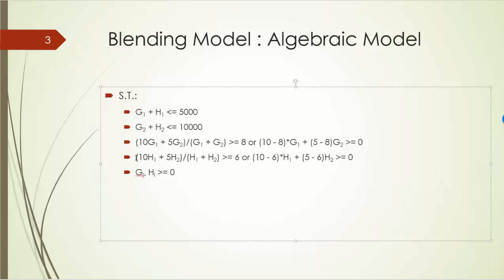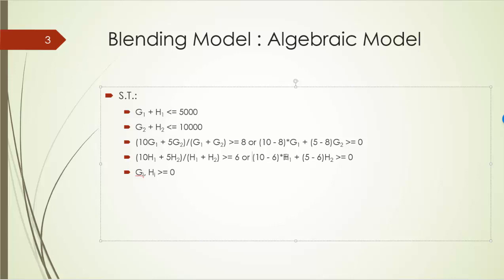Similarly, the average quality level of heating oil is (10·H1 plus 5·H2) divided by (H1 plus H2), which must be greater than or equal to 6. Equivalently, (10 minus 6)·H1 plus (5 minus 6)·H2, which gives 4·H1 minus H2, must be greater than or equal to 0. And don't forget the non-negativity constraints.